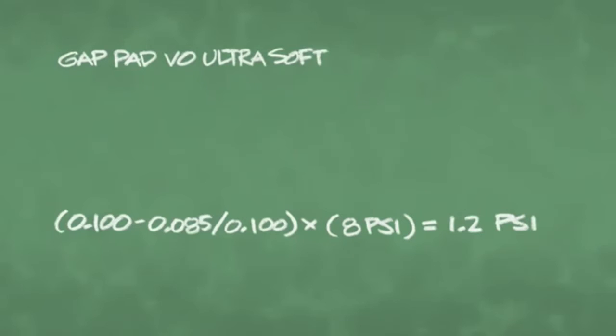For our example, we will use a pad 100 mils thick. Now, subtract the amount you want to deflect. Let's try 15%.